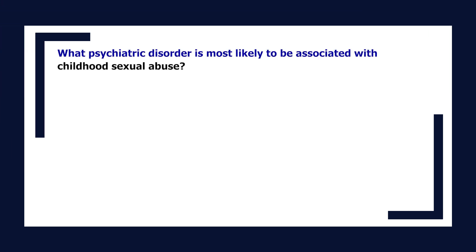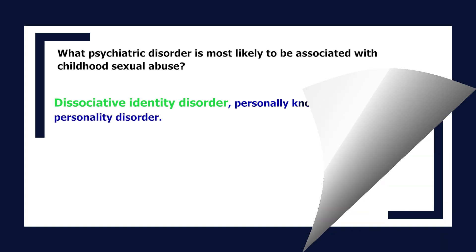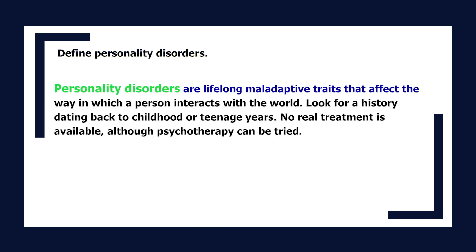What psychiatric disorder is most likely to be associated with childhood sexual abuse? Dissociative identity disorder, previously known as multiple personality disorder. Personality disorders are lifelong maladaptive traits that affect the way a person interacts with the world. Look for a history dating back to childhood or teenage years. No real treatment is available, although psychotherapy can be tried.